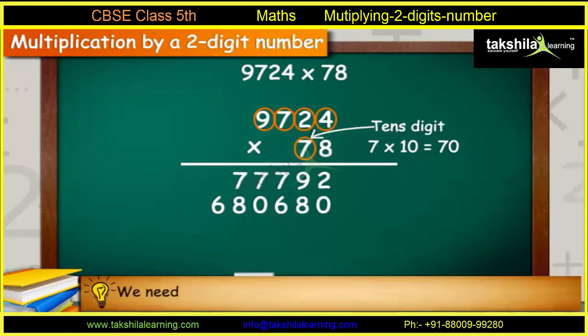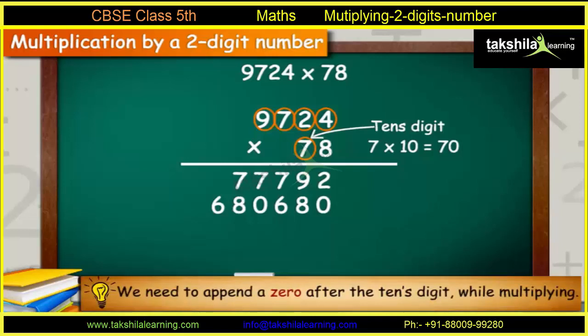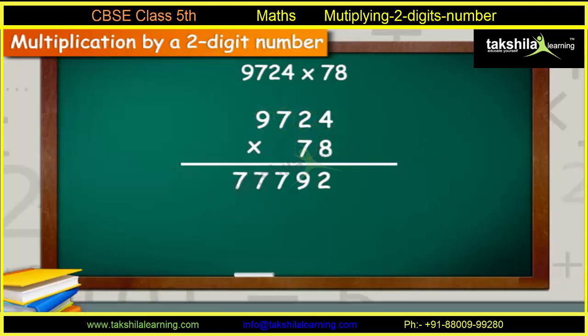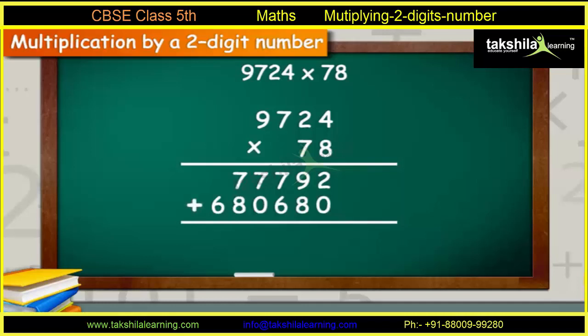Which comes out to be 6,80,680. Please note, we need to append a zero after the tens-digit while multiplying. Place this number as shown below 77,792. Now, add all the numbers together. The final sum comes out to be 7,58,472. This is your answer.